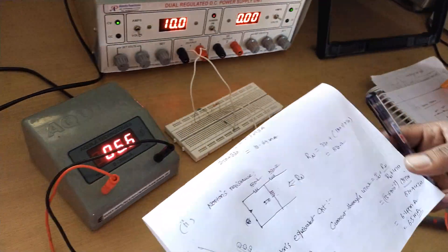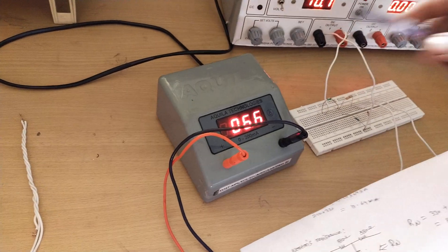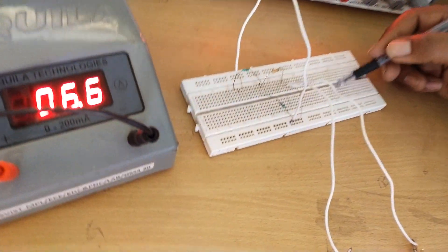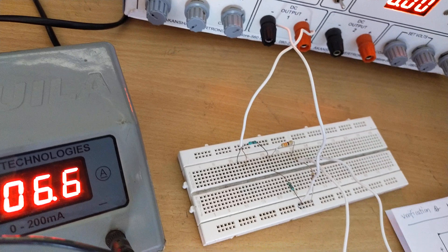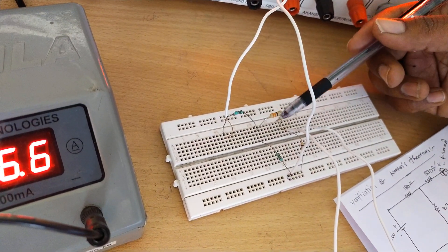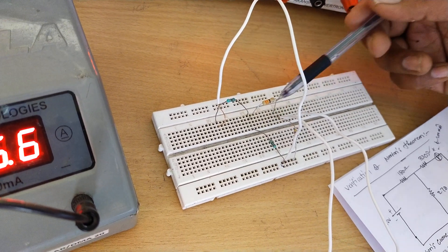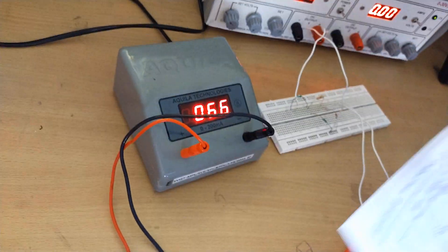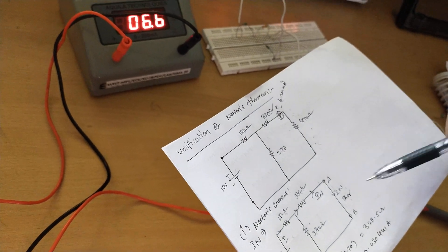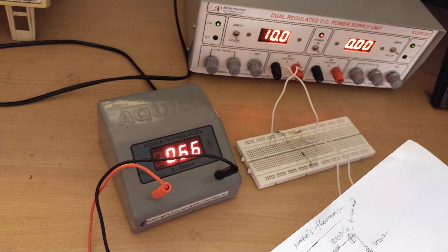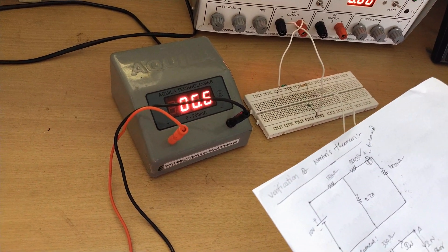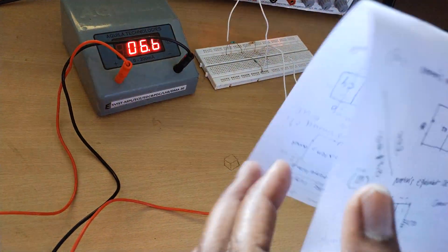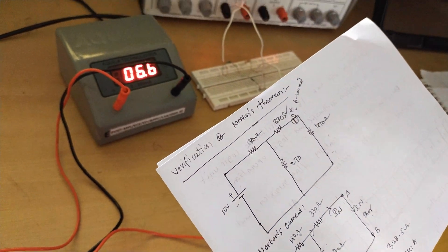At 10 volts, the current through the 470 ohm resistance is 6.6 milliamps. Previously we calculated theoretically 6.5 milliamps, and practically we obtained 6.6 milliamps. Hence Norton's theorem is proved. The circuit was built on the breadboard with 180 ohm and 330 ohm, with 270 ohm in parallel and 470 ohm connected with an ammeter. Both theoretically and practically we verified Norton's theorem at 6.6 milliamps. For how to calculate Norton's theorem, a video is available — check the description. Thank you.